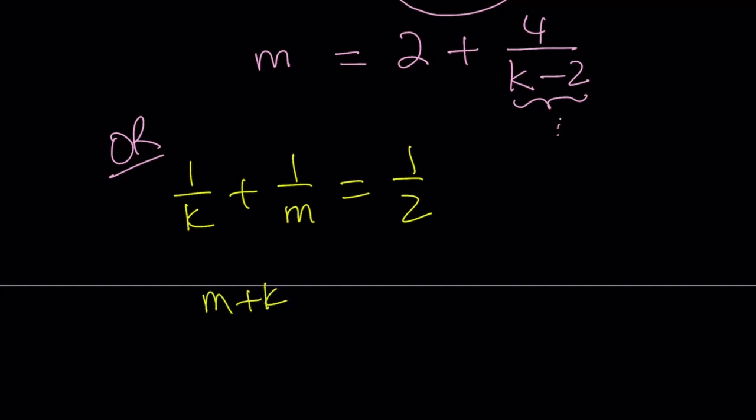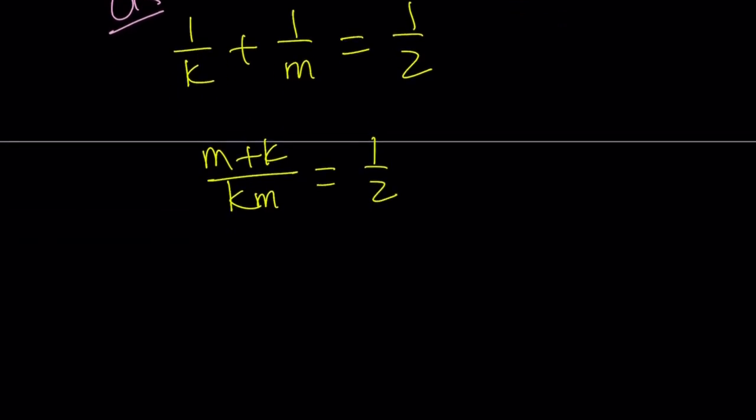You have 1 over k plus 1 over m equals 1 half. You can make a common denominator: m plus k over km equals 1 half. Let's cross multiply. When we do, we get km equals 2m plus 2k.